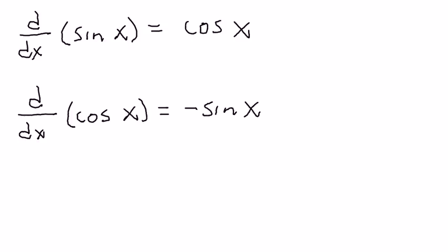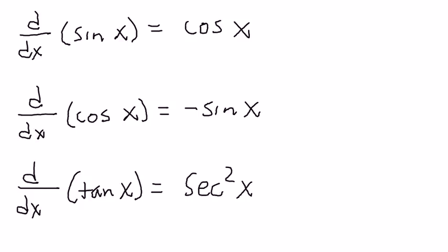The derivative of the cosine of x is the negative sine of x. And the derivative of the tangent of x is going to be the secant squared of x. Eventually, down the road, we're going to be doing some different stuff with this. But those are the basic 3.